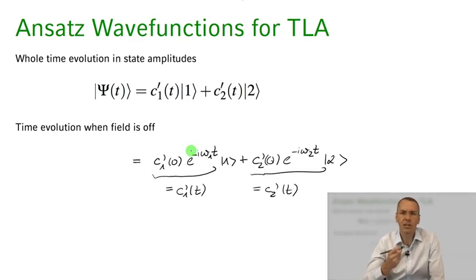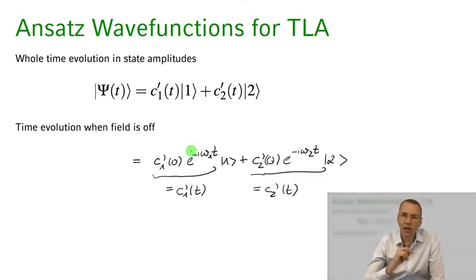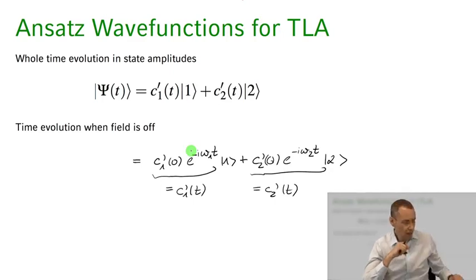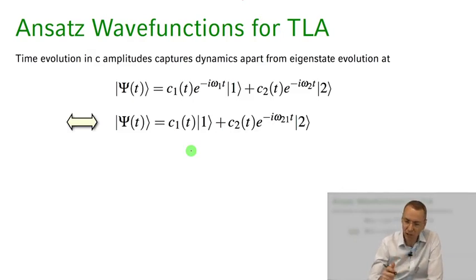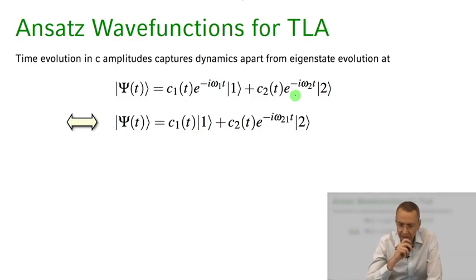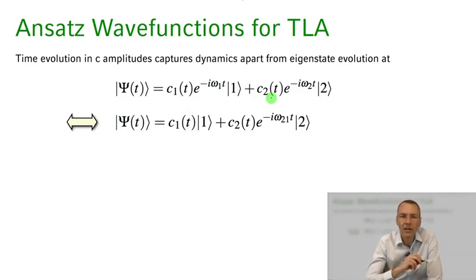But that's not really what we're interested in, because this intrinsic evolution of the eigenstates is kind of trivial and not due to the light-atom interaction. We want to see how the amplitudes change on top of this trivial time evolution that is always present. So to explicitly separate this, we make a different ansatz — one where we factor out this trivial time evolution. We chose this ansatz at the start of the course.